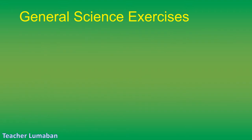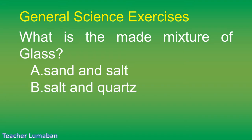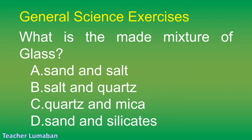What is glass made of? Letter A: sand and salt. Letter B: salt and quartz. Letter C: quartz and mica. Letter D: sand and silicates.